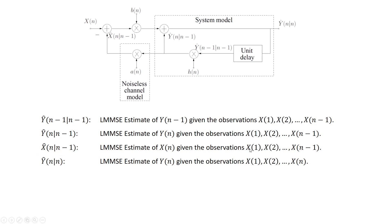We also call X-hat of n given n-1 the one-step prediction of the process X. Notice that based on all samples of X up to time n-1, we predict the future value of the process X at time n. Finally, the last estimate is Y-hat of n given n, which is the output of the filter at time n — the LMMC estimate of the unknown process Y at time n, given the observation of all samples of X until that same time n.